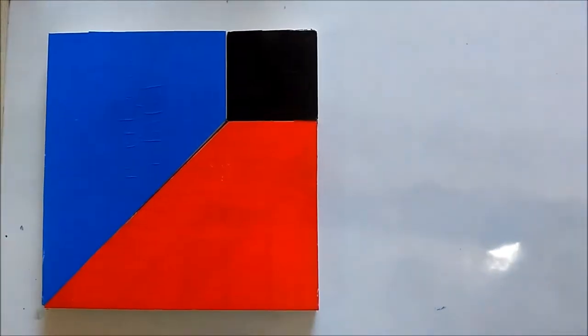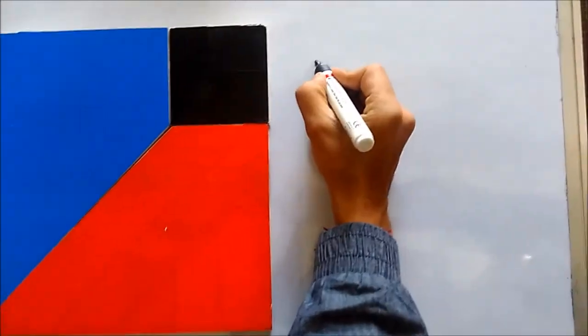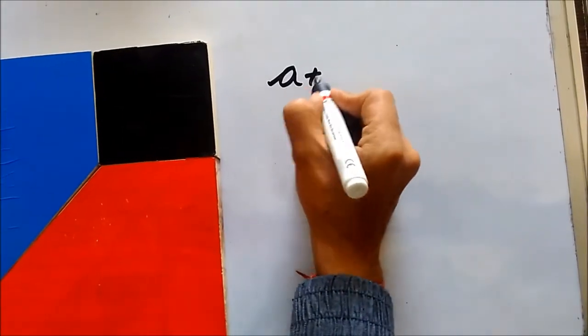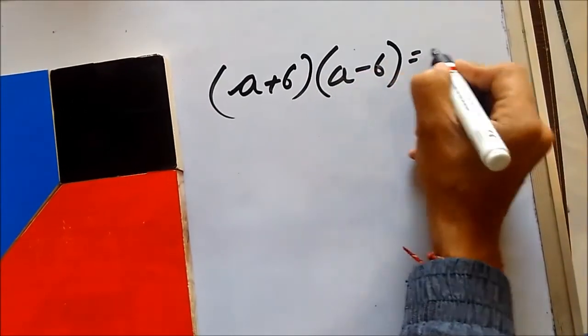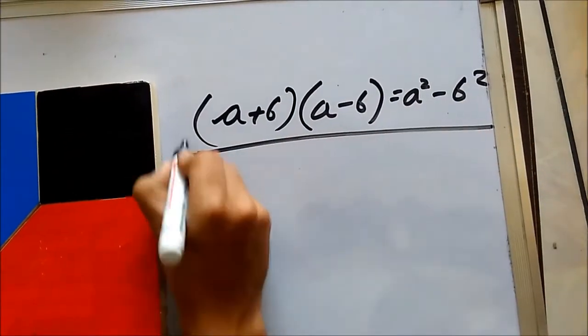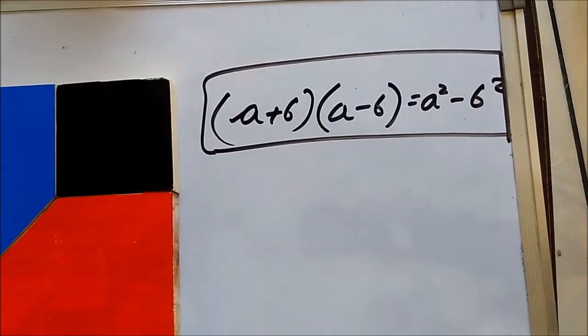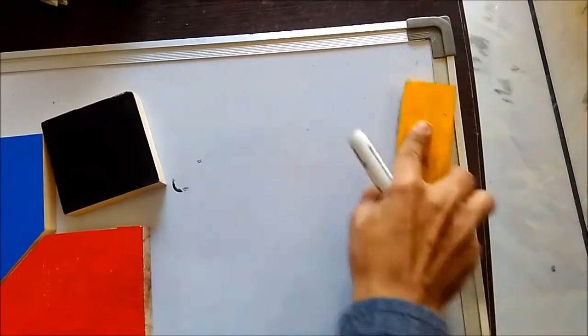This is a math teaching aid which we use in class 9th and 10th to derive a very famous formula: a plus b into a minus b equals to a square minus b square. This is a very famous algebra equation. With the help of this teaching aid, we'll try to find out this particular thing.